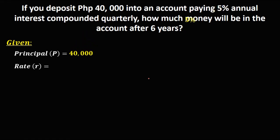Then the rate, it's 5%. Then convert this one to decimal. It's 0.05. Then for the time, that's 6 years.